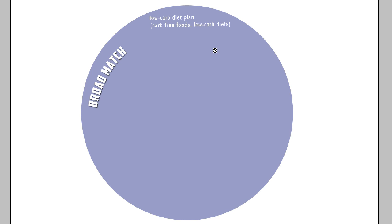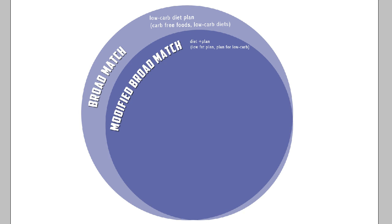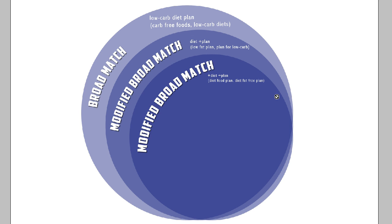Next we have modified broad match. In this case, I've got the word 'diet,' then a plus sign directly next to the word 'plan.' This would cause my ad to trigger for terms like 'low-fat plan' or 'plan for low-carb.' There's a second type of modified broad match where we put the plus sign in front of both terms — in front of 'diet' and 'plan' — which would trigger my ad for terms like 'diet food plan' or 'diet fat-free plan.'